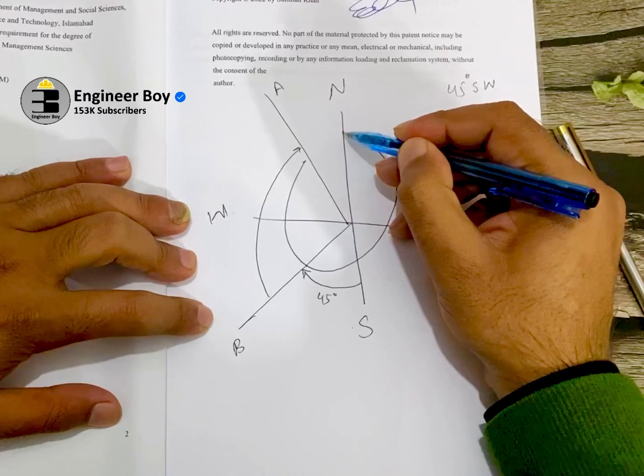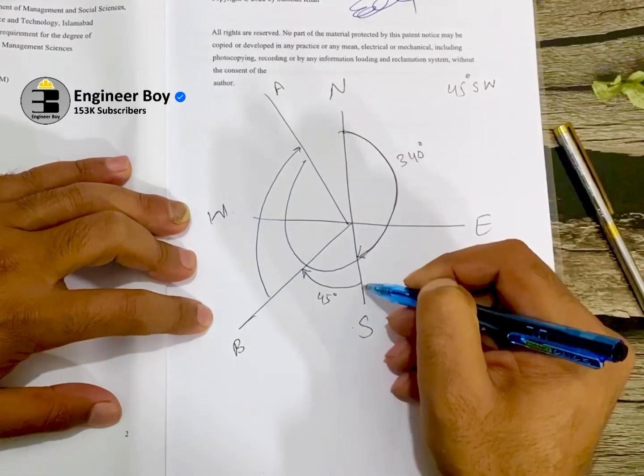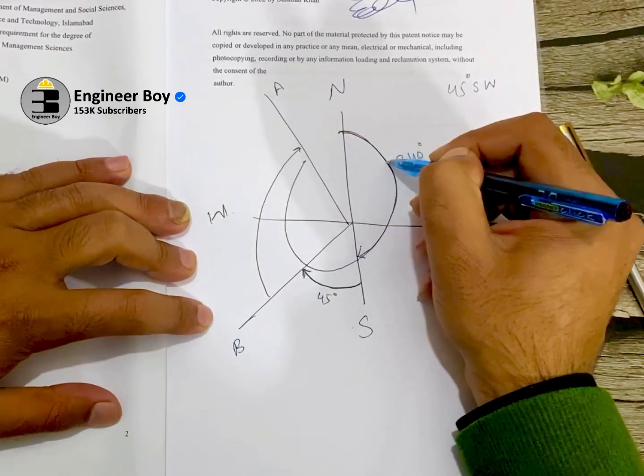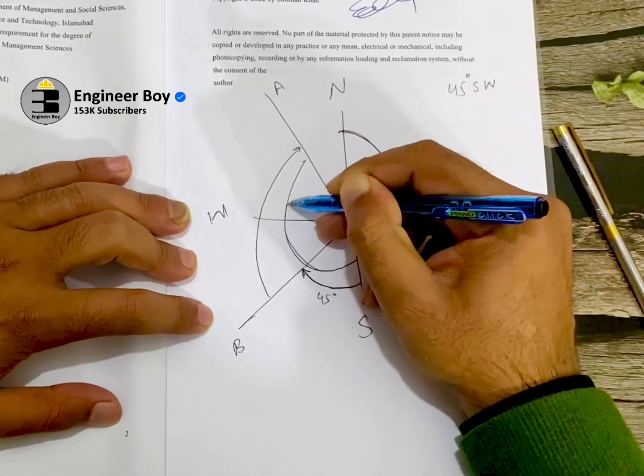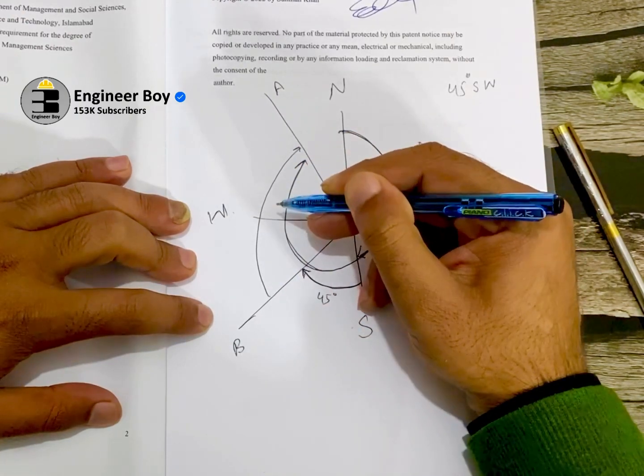if we subtract 180, which is this one, and 45, which is this one, from the whole circle bearing of line A, that's going to be the angle between line A and B.